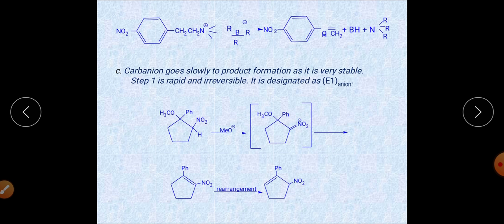In the third parameter, the carbanion goes slowly to product formation because the carbanion is quite stable. Step one is fast and irreversible. This kind of reaction is called the E1 anion mechanism. Because of the high stability of the carbanion, its conversion to product is slow.